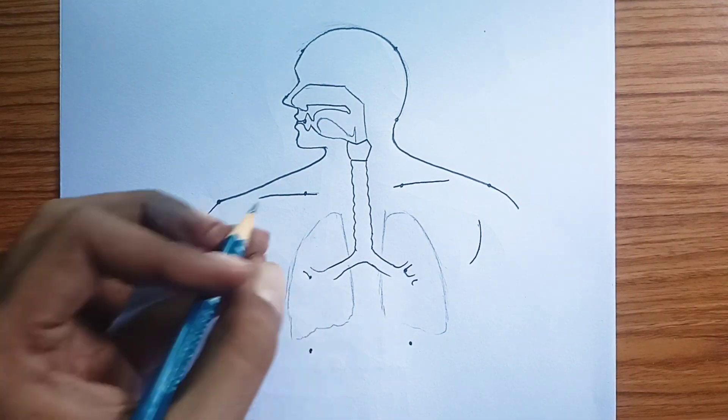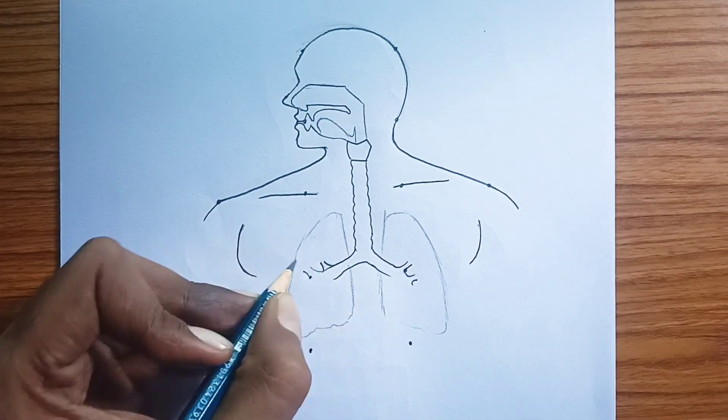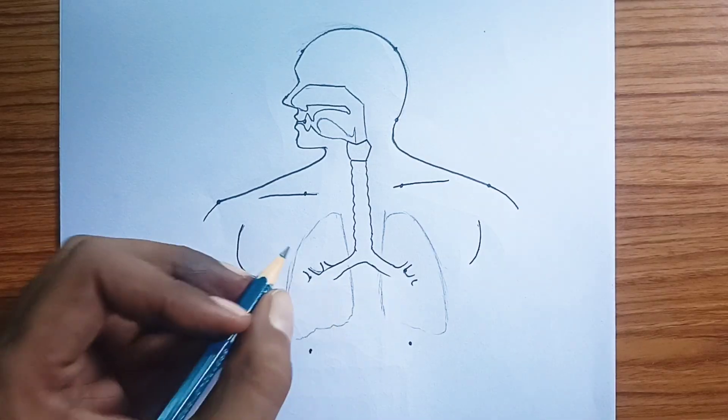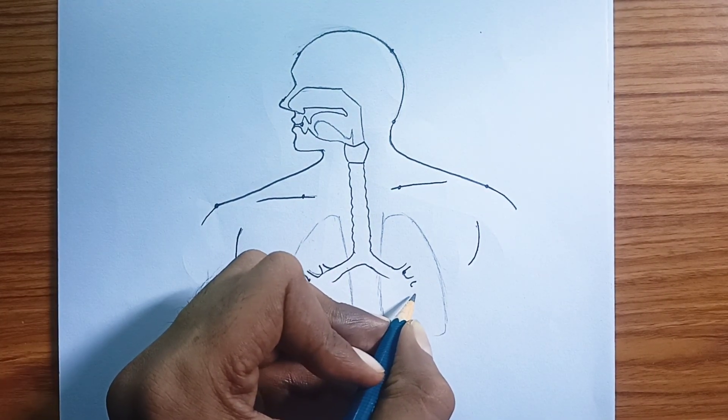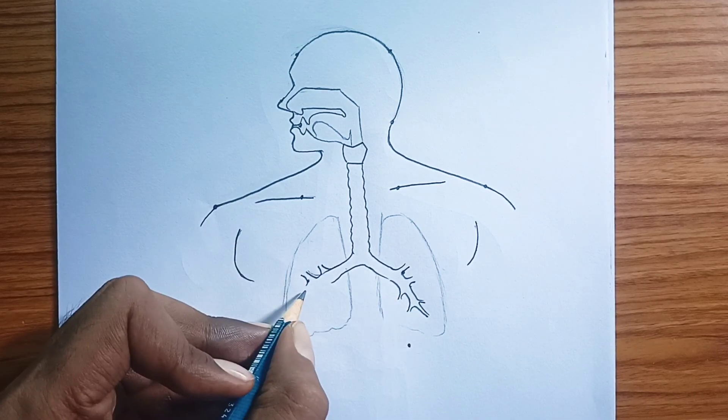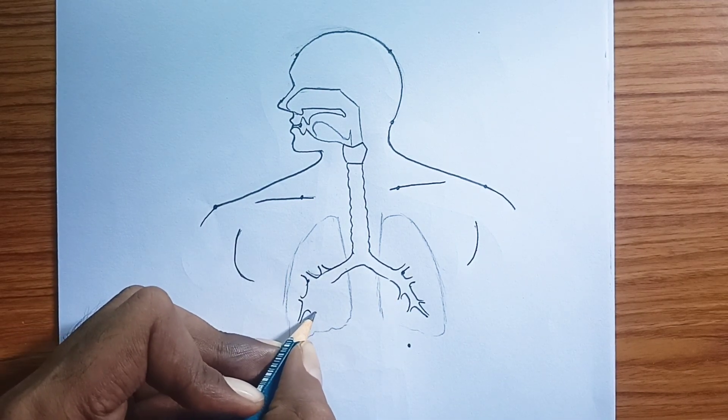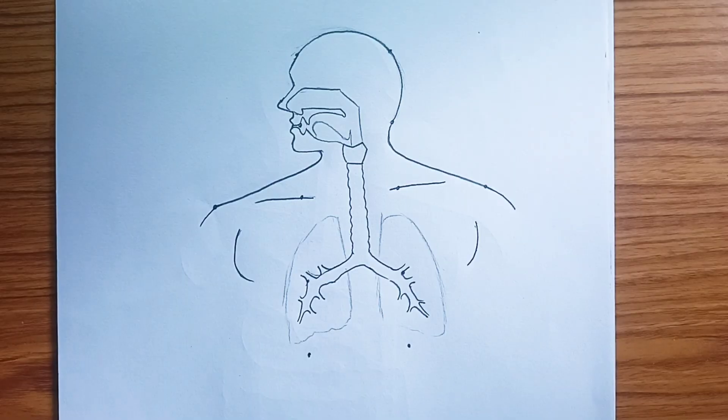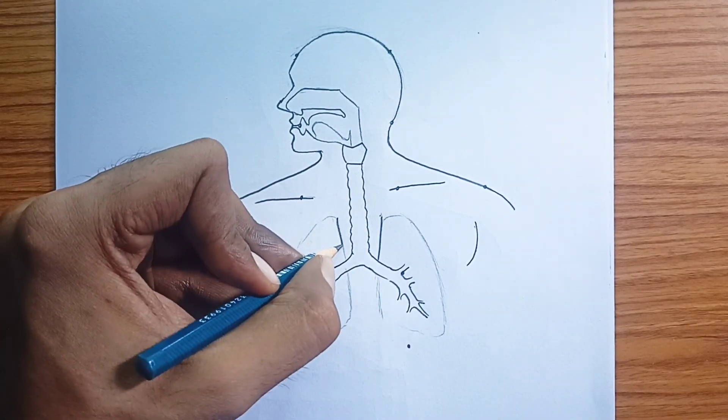Next, air travels through the larynx, which contains your vocal cords. As air passes over these cords, they vibrate to produce sound. A flap of tissue called the epiglottis sits above the larynx and prevents food from going down the wrong way into your airway when you swallow.